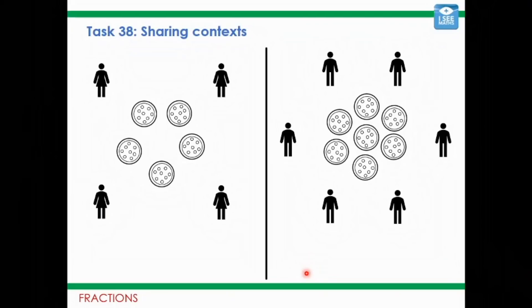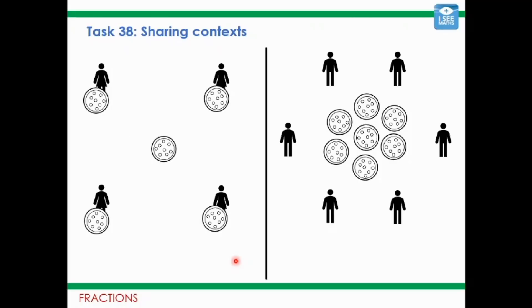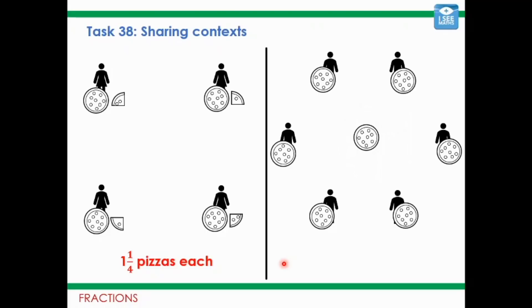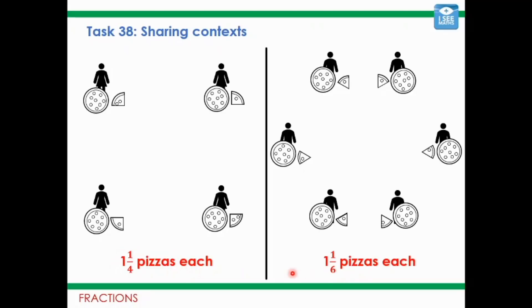The task from yesterday: four girls sharing five pizzas, and six boys sharing seven pizzas — who got more pizza, or did they get the same? Starting with the girls, they each get one, and the last pizza is shared equally between four girls, so each girl gets one and a quarter pizzas. For the boys, six boys share seven pizzas — one each, and that last pizza is split between six boys, giving each one and a sixth. One and a quarter is more than one and a sixth.